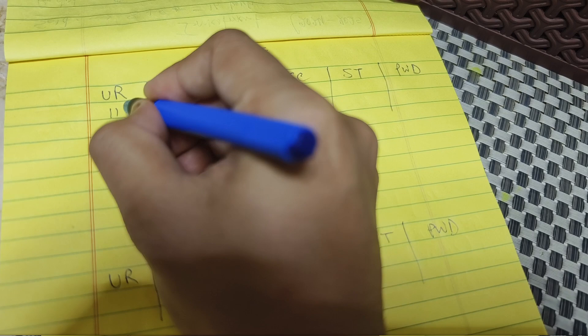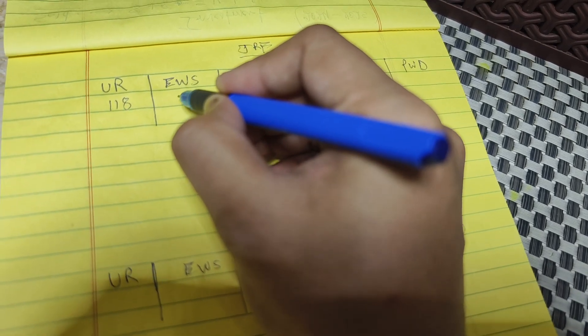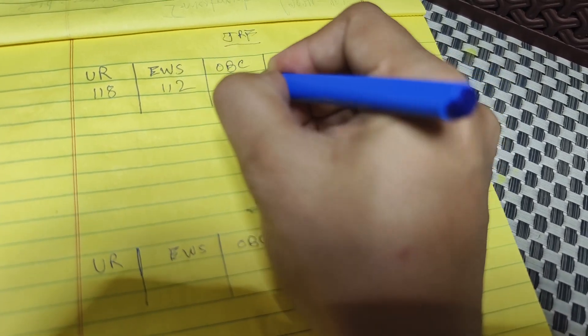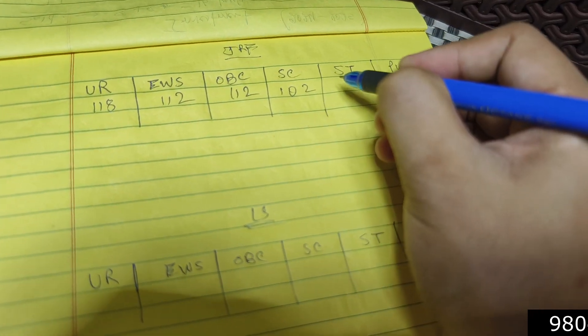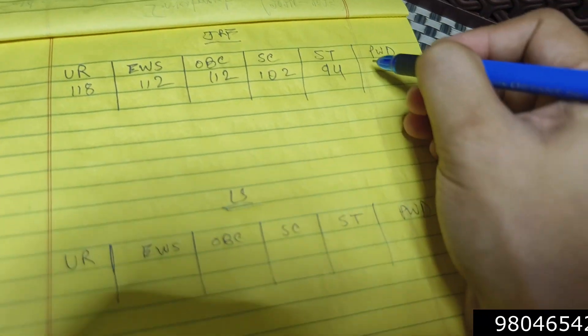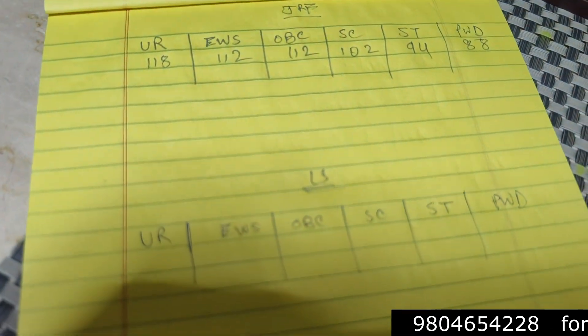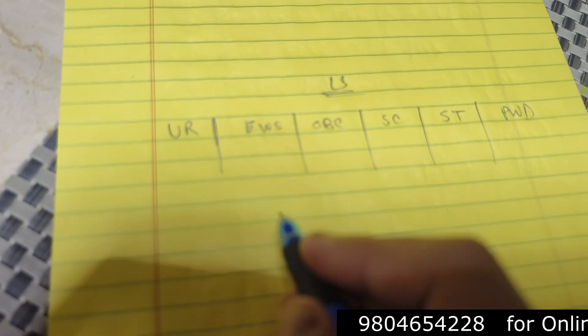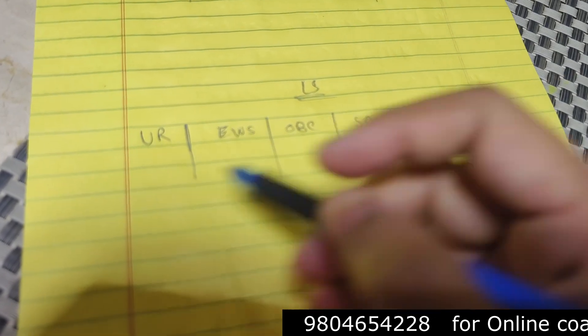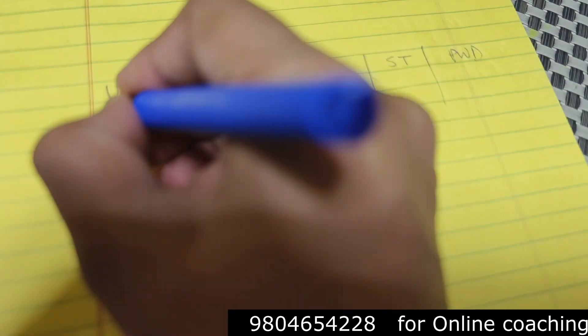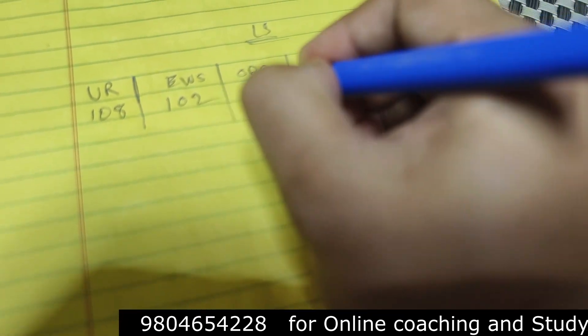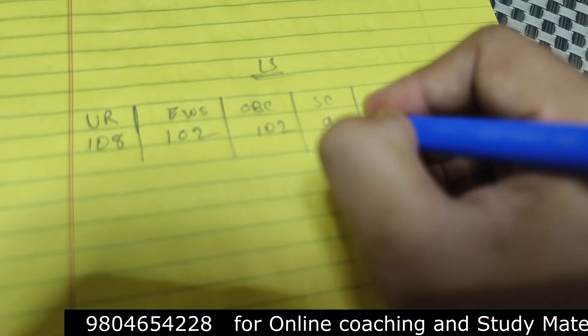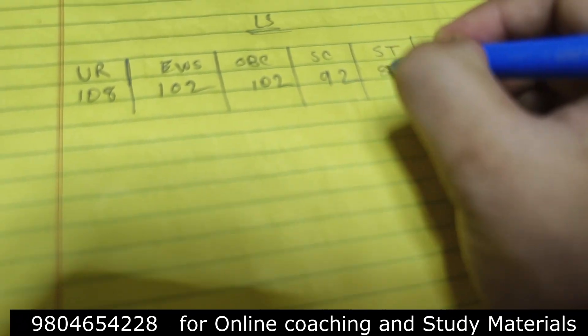JRF marks for unreserved category will be 118, EWS 112, OBC also 112, SC 102, ST 94 and PWD 88. This is the marks for JRF. For LS lectureship what will you put? 108, 102, 102,